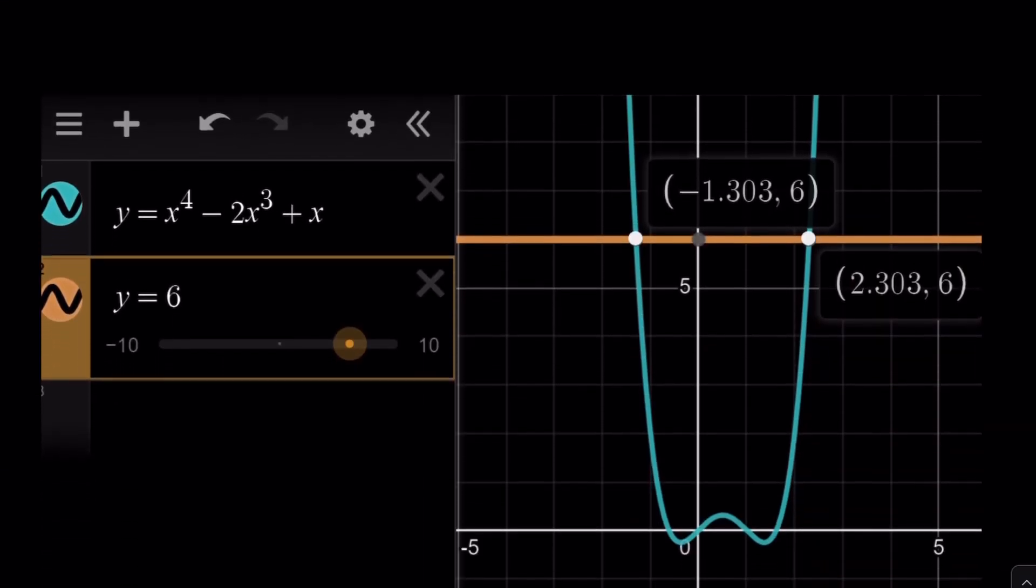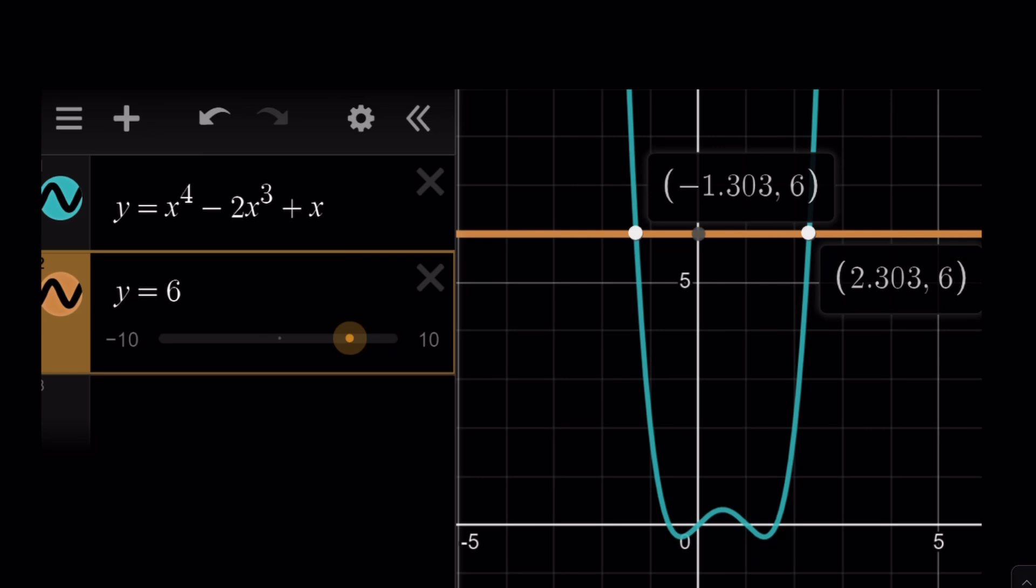Do you want to look at a graph of this? Looks like I did make one. Yes. This is a quartic equation that curves like that. But only two real solutions because it intersects the horizontal line y equals 6 at two points.